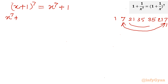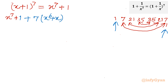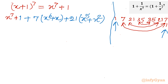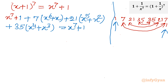I club the 7 and 7 terms, the 21 and 21 terms, and the 35 and 35 terms. So the expansion gives x^7 + 1 plus 7(x^6 + x) plus 21(x^5 + x^2) plus 35(x^4 + x^3), noting that the power sum within each bracket is always 7. Then we cancel x^7 + 1 from both sides.